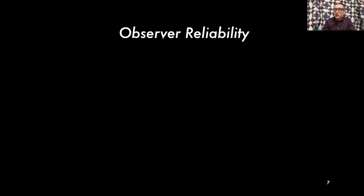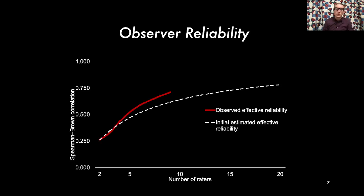One thing we explored was how many observers you need to achieve a reliable consensus prediction of mind-wandering. We did a pilot study to project the expected reliability, then collected up to nine observers and found that reliability improved substantially, though it might be possible to achieve even better reliability in the future.